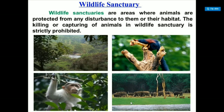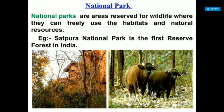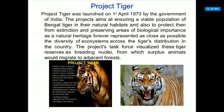Wildlife sanctuaries are areas where animals are protected from any disturbance to them or their habitat — the killing or capturing of animals in a wildlife sanctuary is strictly prohibited. National parks are areas reserved for wildlife where animals can freely use habitats and natural resources. An example is Satpura National Park, the first reserve forest in India.